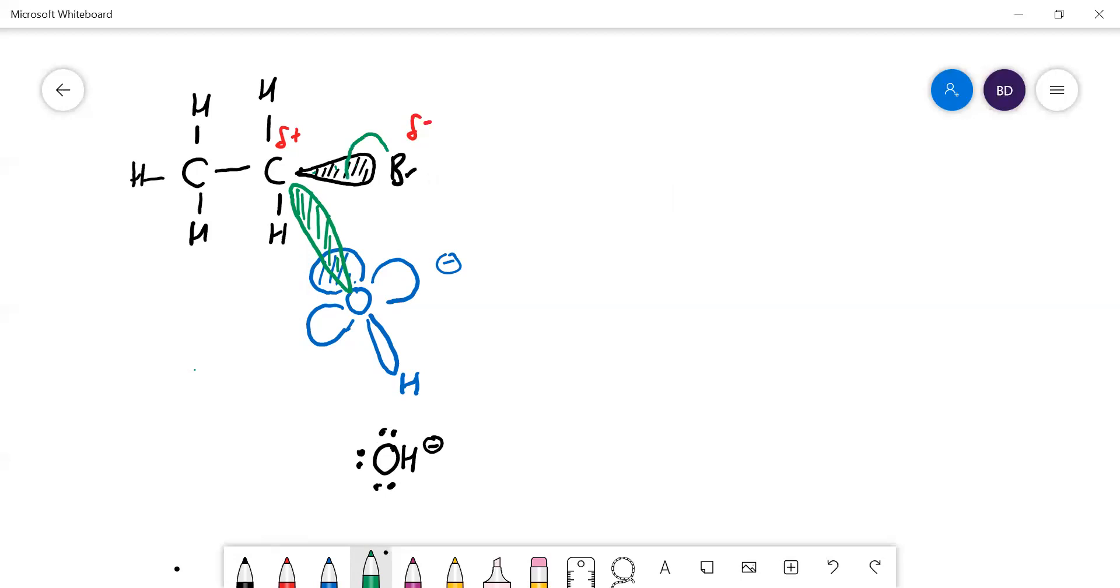The bonding orbital there shrinks back and becomes essentially a lone pair. Don't forget the bromine has got three lone pairs - I'll draw them like that.